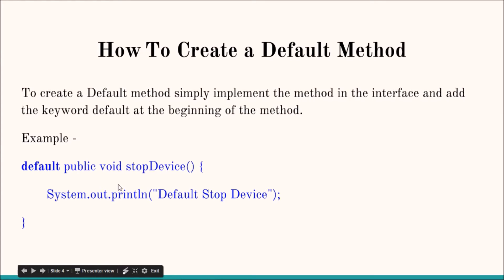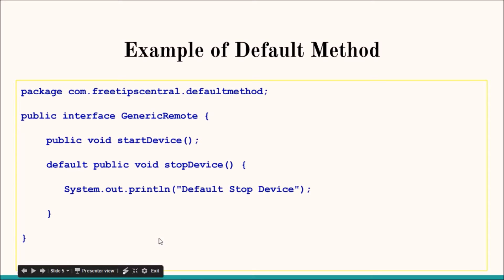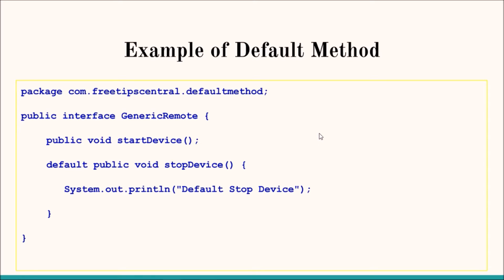Creating a default method is very simple. In any interface, just start with the keyword 'default', then write the method — for example, stopDevice with System.out.println inside. Here is the full interface: public interface GenericRemote has a normal abstract method startDevice, and also a default method stopDevice. If you add this, all implementing classes will not have any compile errors, and at the same time they can still use the new method.